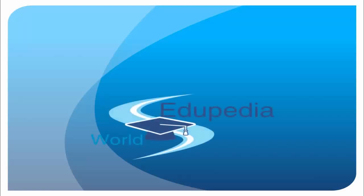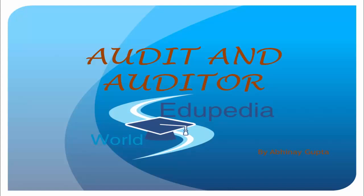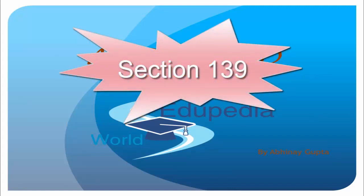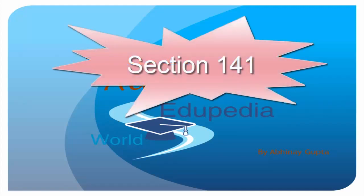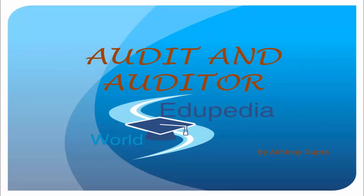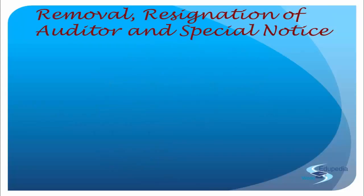Welcome back to the Edupedia World. I am Abhinaya Gupta and today we are continuing with the chapter on audit and auditor. So far we have covered the various provisions of Section 139 in detail in the previous few lectures — the appointment of the first auditor, subsequent appointment, appointment in case of casual vacancy, the notice, and the consent given by the auditor. Today we will be dealing with Section 140, which deals with the removal and resignation of the auditor and the special notice.